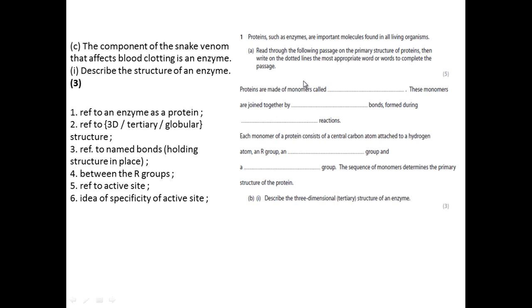1A here. Proteins such as enzymes are important molecules found in all living organisms. Read through the following passage on the primary structure of proteins, then write on the dotted lines the most appropriate word or words to complete the passage.